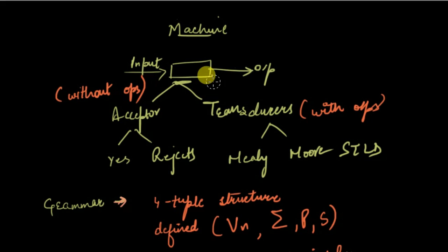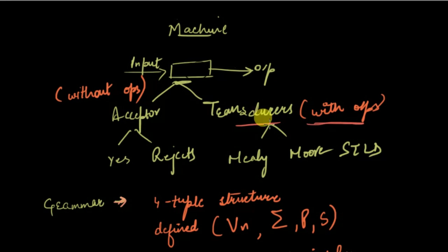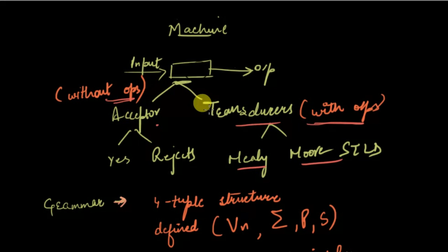Before starting off with the Chomsky classification, we should first understand some basics about machines. As we studied in the STLD subject, if there is a machine and you are providing it with some input, it gives some output. If that machine provides us with some meaningful output, those are called transducers, which are divided into two subcategories: Mealy machine and Moore machine. An acceptor is one which gives us a yes or a no — that is, if we provide it a string, it either accepts it or rejects it.